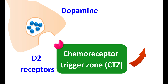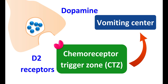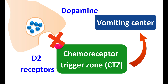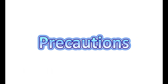Dopamine activating D2 receptors stimulates signals in the CTZ, which are then sent to the vomiting center in the brain. When the vomiting center is activated, it can induce emesis. Amisulpride mainly blocks signaling at the CTZ by selectively blocking D2 receptors, reducing dopamine-mediated CTZ stimulation and thereby reducing emesis after an operation. This is why amisulpride can be used for both treatment and prevention of post-operative nausea and vomiting.